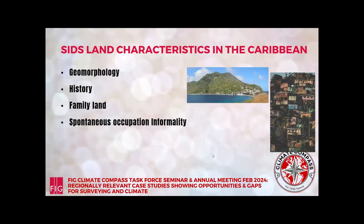The geomorphology, as I mentioned, is limited land, and many of the countries have this volcanic shape, which means slopes that will be more vulnerable to slipping and causing floods, and limited coastal areas where everybody can use. The slopes are usually occupied for residential and agricultural purposes, and that just makes the flooding and land slippage worse.